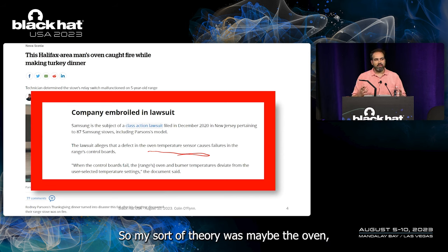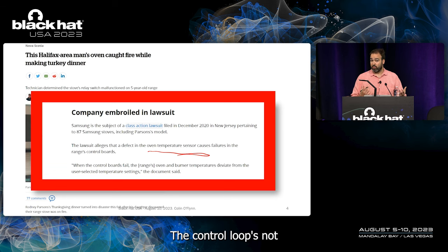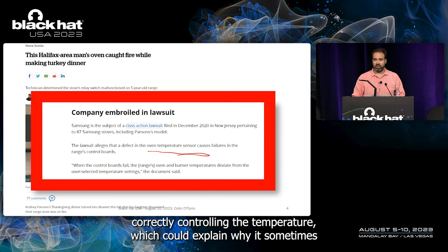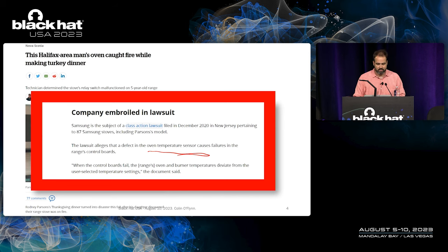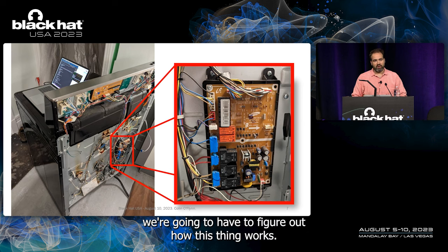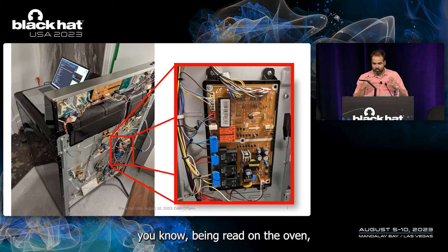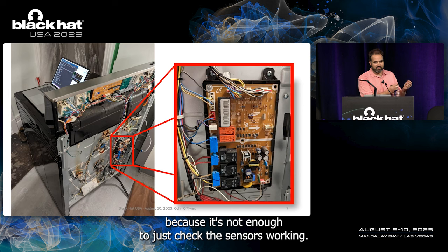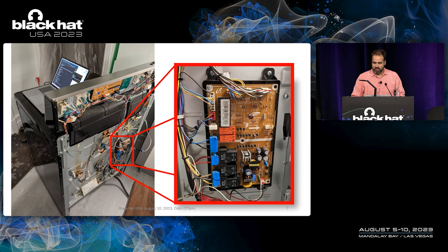My theory was that the oven has a firmware issue — maybe the control loop isn't correctly controlling the temperature, which could explain why it sometimes goes too high, causing burning, and also why it doesn't reach the right temperature. To investigate, I needed to figure out what the actual temperature being read by the oven was, because I suspected it was a firmware problem. This oven is not a super new model — it's not an IoT oven. It has a control board on the back with a microcontroller running firmware.